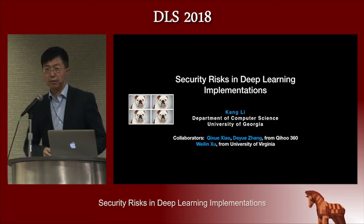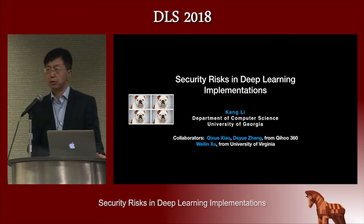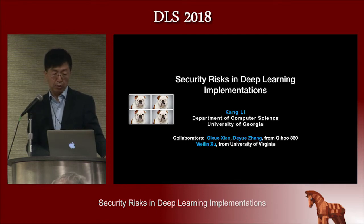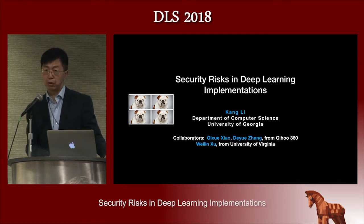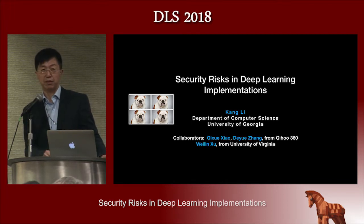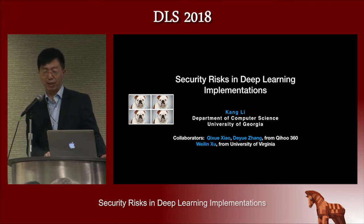Hi, I'm Kang from University of Georgia. This is a joint work with Qi Xue and De Yue Zhang from Qi Hu 360, and also Wei Lin from University of Virginia. Notice that we have four authors and there's a picture of four dogs. There's no correlation — it's just one example I'm going to use.